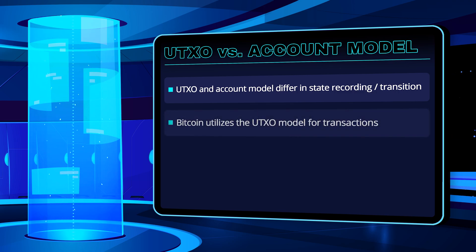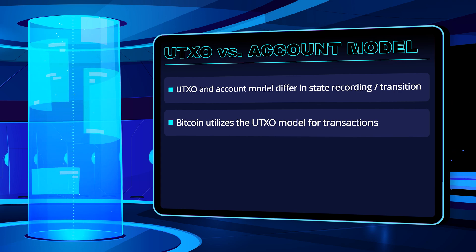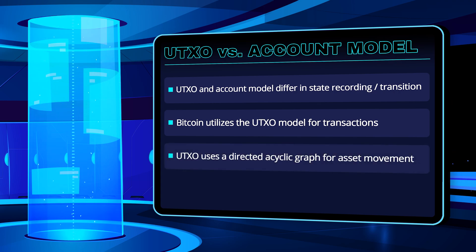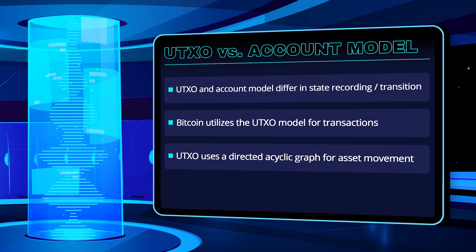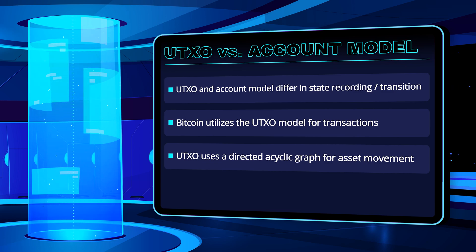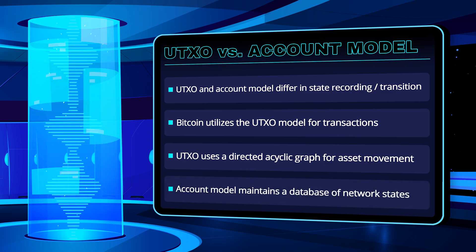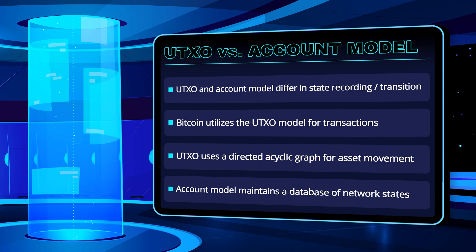In the UTXO model, used by Bitcoin, the movement of assets is recorded as a directed acyclic graph, or DAG, between addresses, whereas the account model maintains a database of network states.